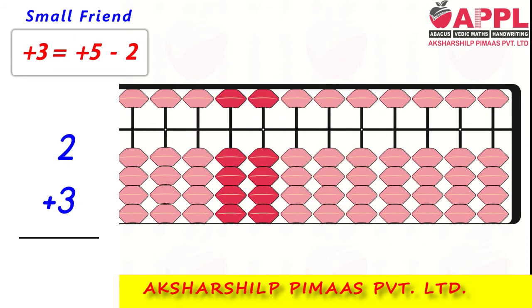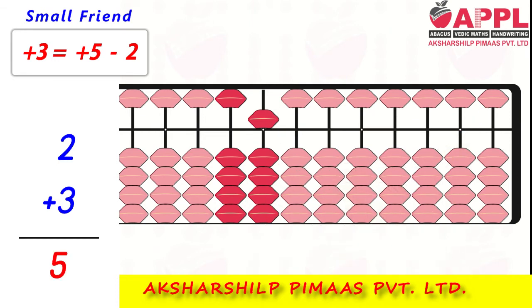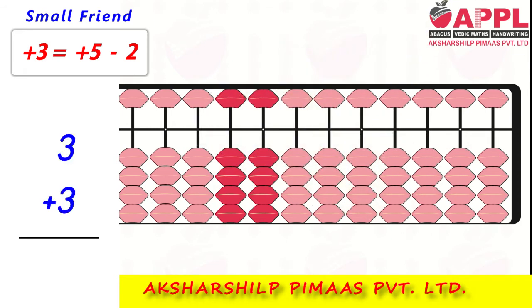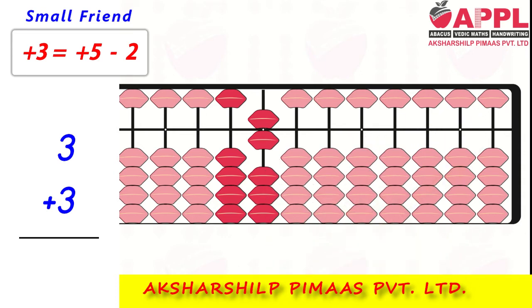Next, addition of 3. Bring 2, then for 3, add 5 less 2, as 2 is the friend of 3. Bring 3, add 5 less 2. 2 is the friend of 3.